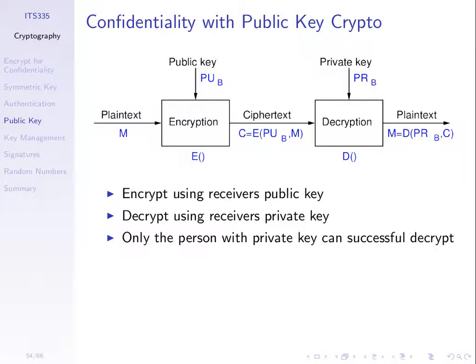By definition, each user has a key pair. They keep their private key private, but they can tell anyone their public key. So in this case, user A knows the public key of B — it's public, you can put it on a website, you can announce it in any way you like. This is confidentiality because you need the private key to decrypt.